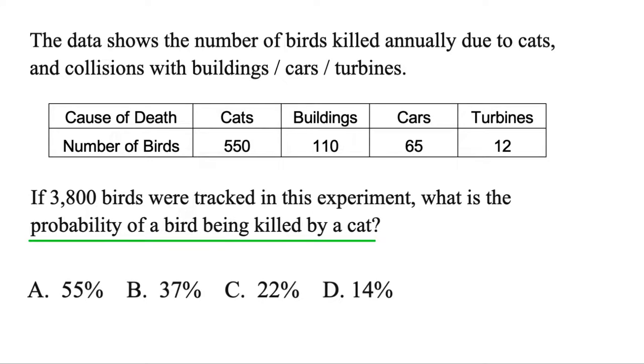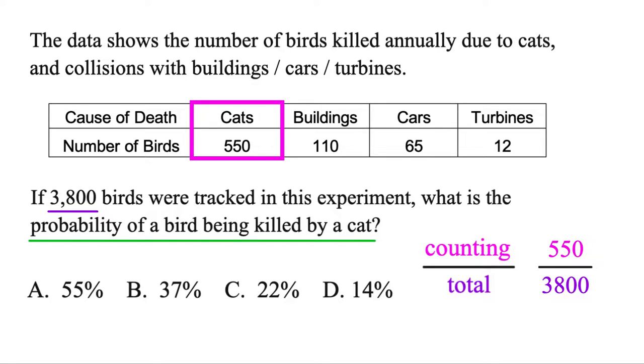In order to find a probability, you could always set up a fraction. Whatever you're interested in or counting goes up top, divided by the total. In this experiment, we have 3,800 birds. What's the probability of a bird being killed by a cat? Well, the ones that we're interested in or counting are the 550 that were killed by cats, so we'll put those up top, and then just divide it by the total, 3,800.